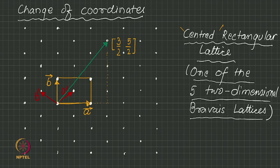In primitive lattice vectors, all lattice translation vectors will always have integer coordinates. So if I transform the green vector to the a prime, b prime system — that was (3/2, 5/2) with respect to a, b — the question is: what is the coordinate of the same green vector with respect to the red primitive vectors? That exercise is what is involved in a change of coordinates. I want to represent this green vector not in the a, b coordinate system but in the a prime, b prime coordinate system. We will come back to that — the way to do it is to set up a coordinate transformation matrix.